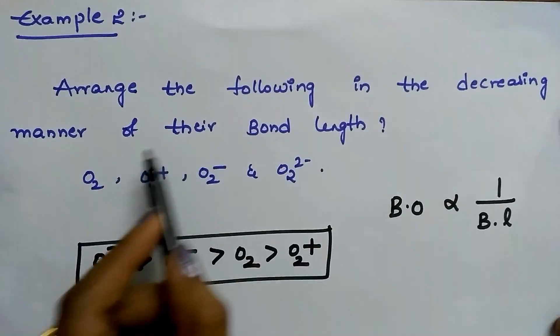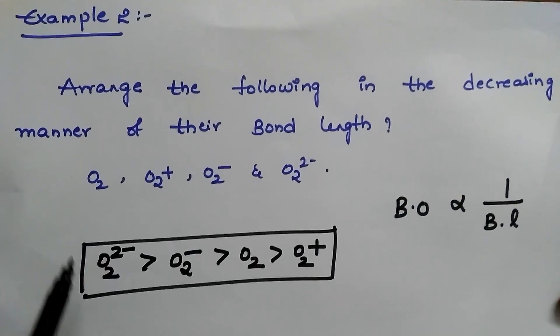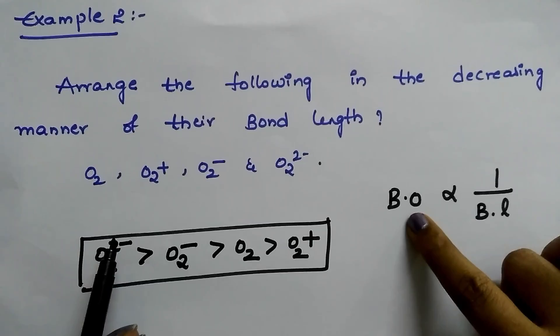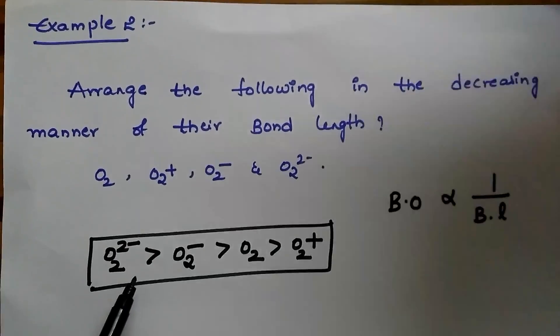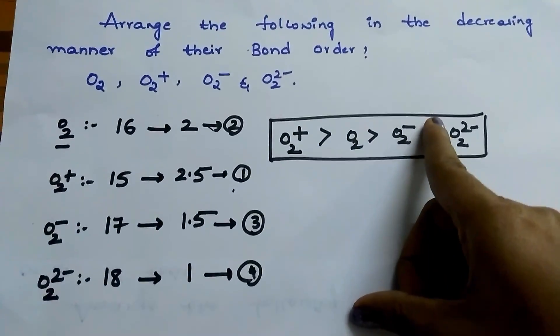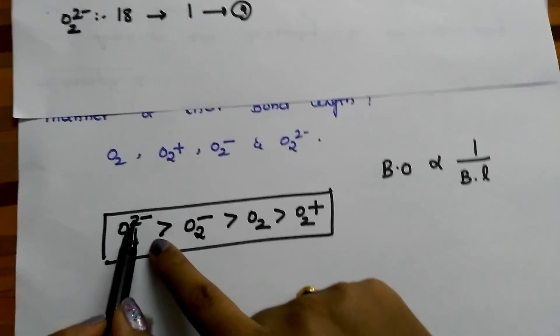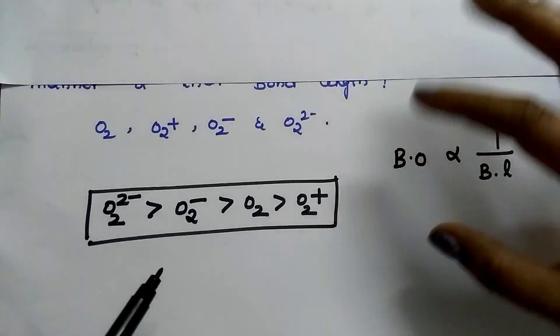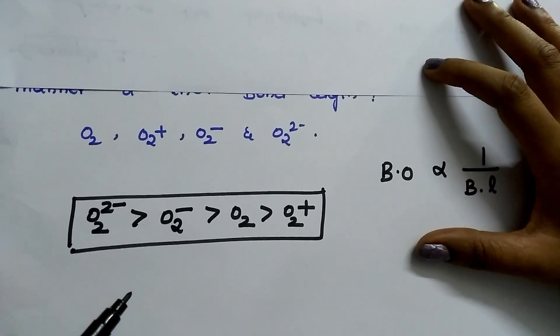Arrange the following in the decreasing manner of their bond lengths. We know that bond order is inversely proportional to bond length. More is the bond order, less is the bond length. In the above example, O2+ has more bond order. For bond length, just reverse. O2(2-) has more bond length, then O2-, then O2, then O2+. If you like this video, click the like button, share, and subscribe to my channel for more updates.